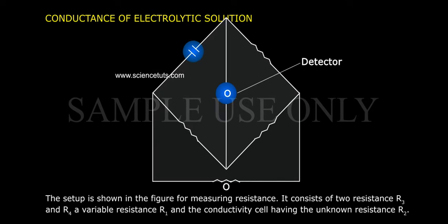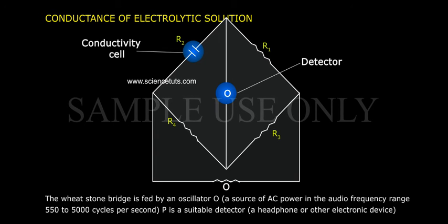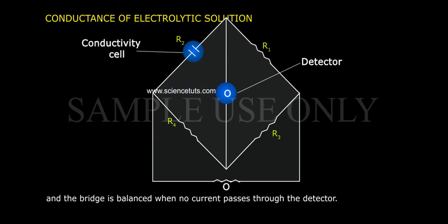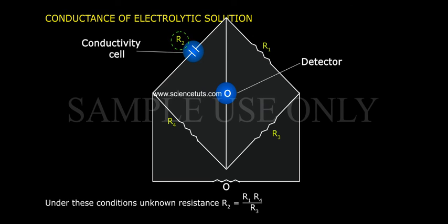It consists of two resistances R3 and R4, a variable resistance R1, and the conductivity cell having the unknown resistance R2. The Wheatstone bridge is fed by an oscillator O, a source of AC power in the audio frequency range 550 to 5000 cycles per second. P is a suitable detector — a headphone or other electronic device — and the bridge is balanced when no current passes through the detector. Under these conditions, the unknown resistance R2 equals R1 times R4 divided by R3.